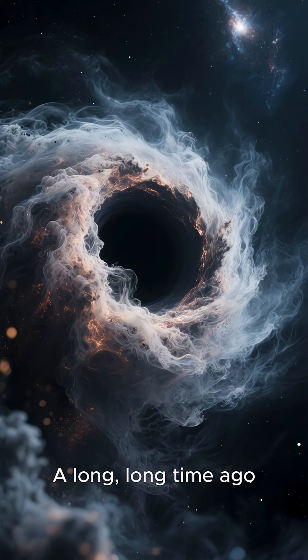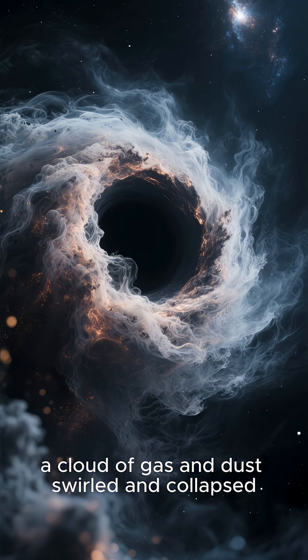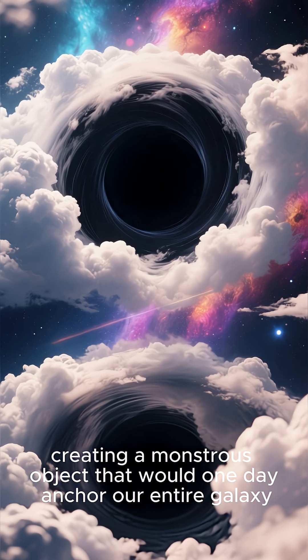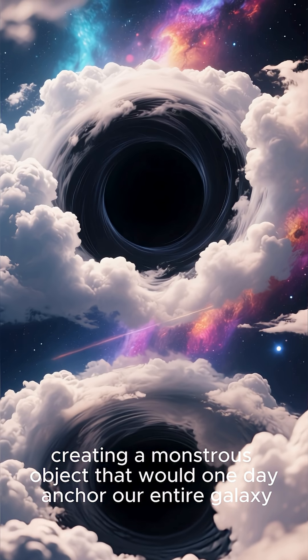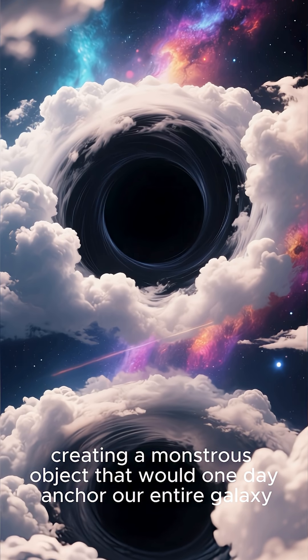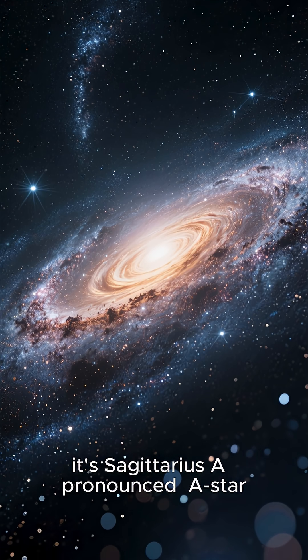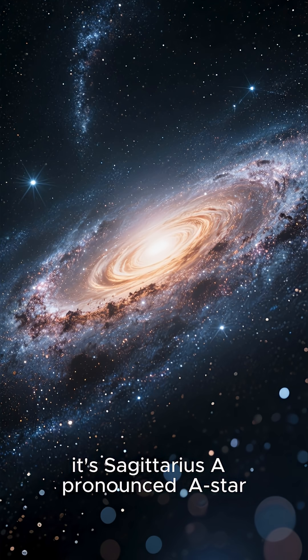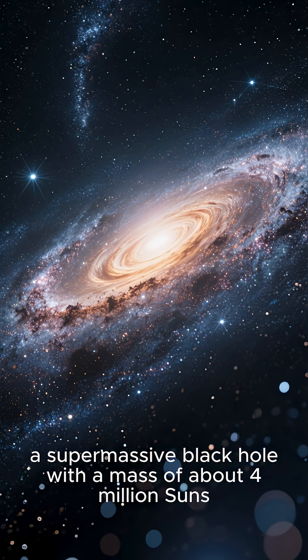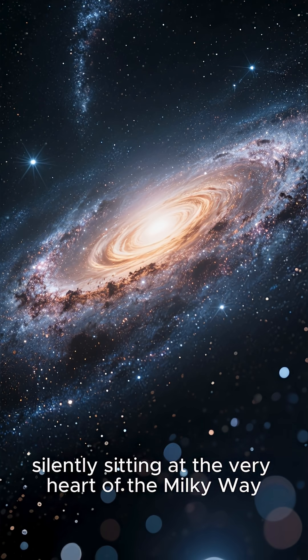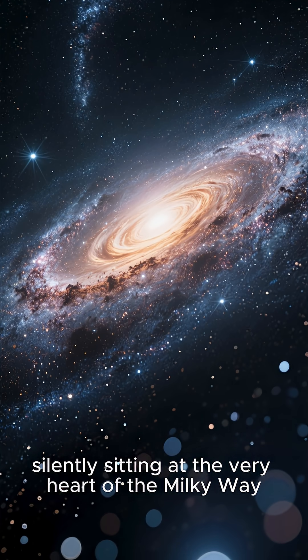A long, long time ago, a cloud of gas and dust swirled and collapsed under its own gravity, creating a monstrous object that would one day anchor our entire galaxy. This isn't just any black hole—it's Sagittarius A*, a supermassive black hole with a mass of about four million suns, silently sitting at the very heart of the Milky Way.